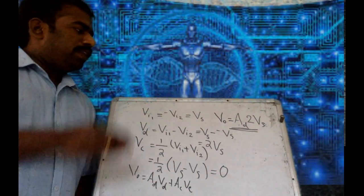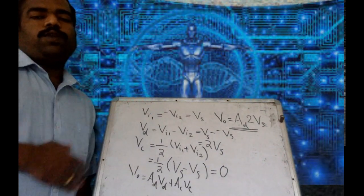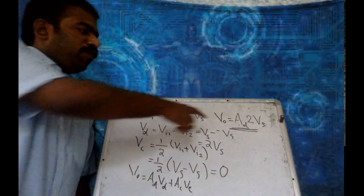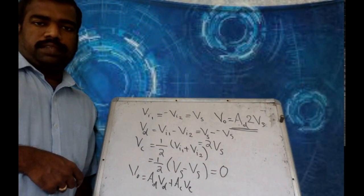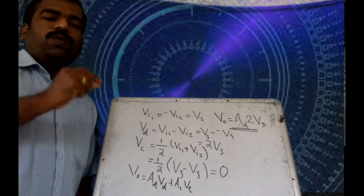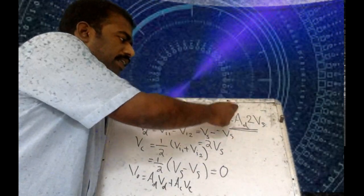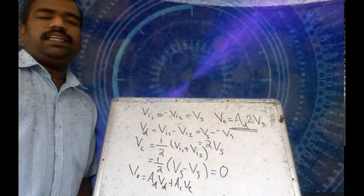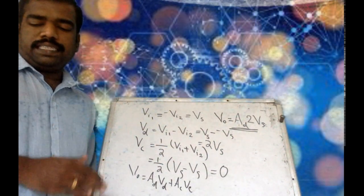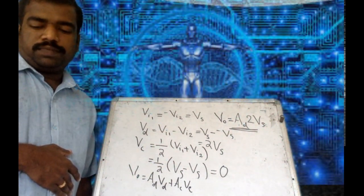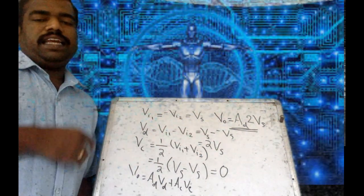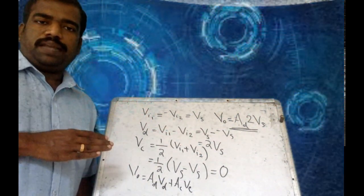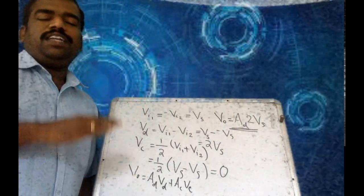This shows that when the input signals are exact opposite signals, the output is the differential gain times twice the input signal applied to one of the input terminals. So the output voltage is AD times 2Vs, and when the signals are distinct, the output voltage depends only on the differential gain.